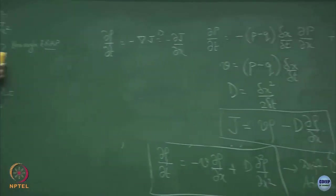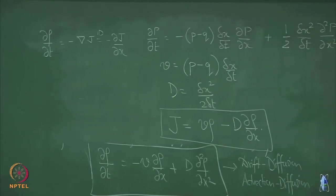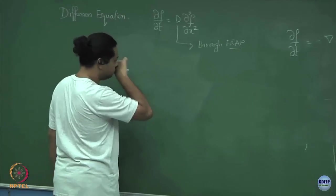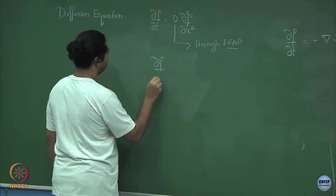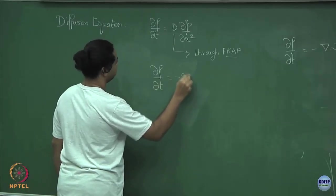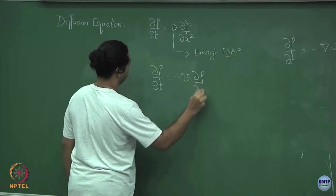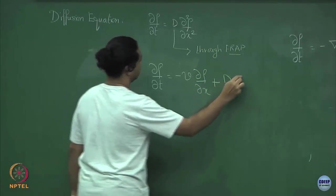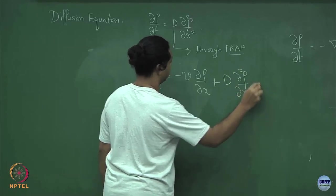So we had the diffusion equation last class; now we have derived the drift-diffusion equation: del rho/del t equals minus V del rho/del x plus D del² rho/del x².